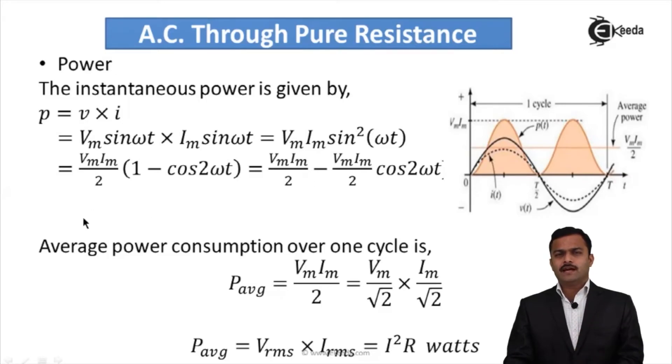Every time we supply AC, average power comes into the picture. We need to calculate average power over one cycle. That is given by Pavg = VmIm/2. Why? Because the average of any sinusoidal quantity over one complete cycle is always zero.